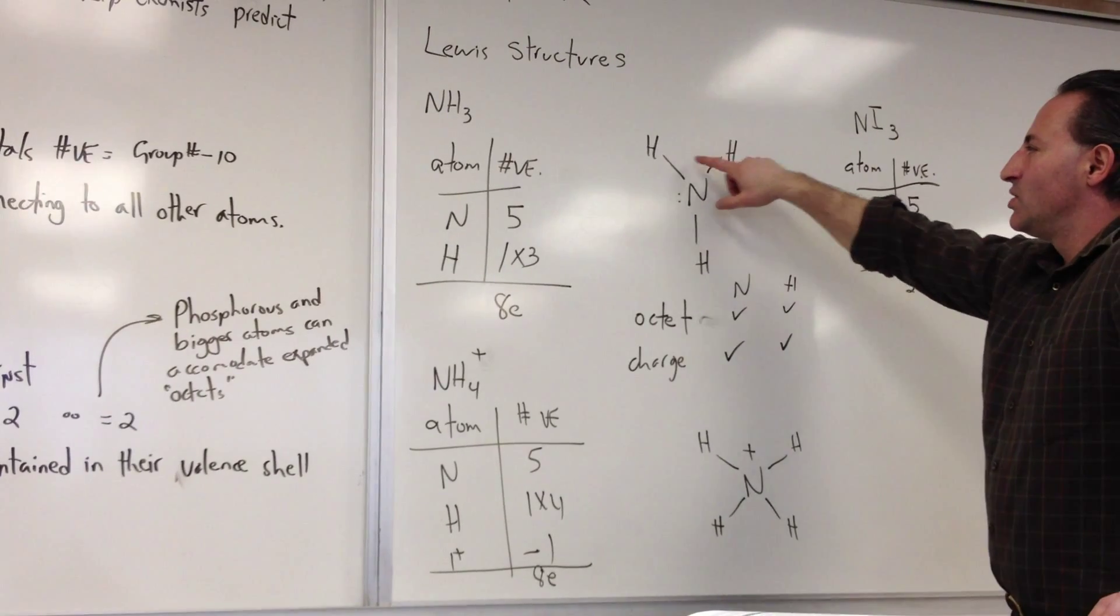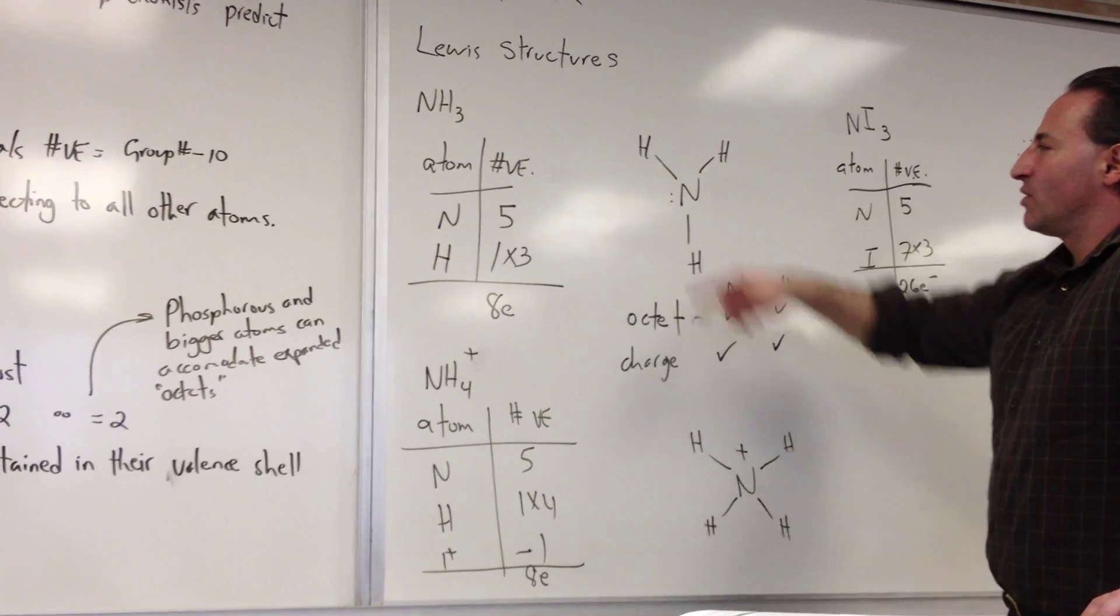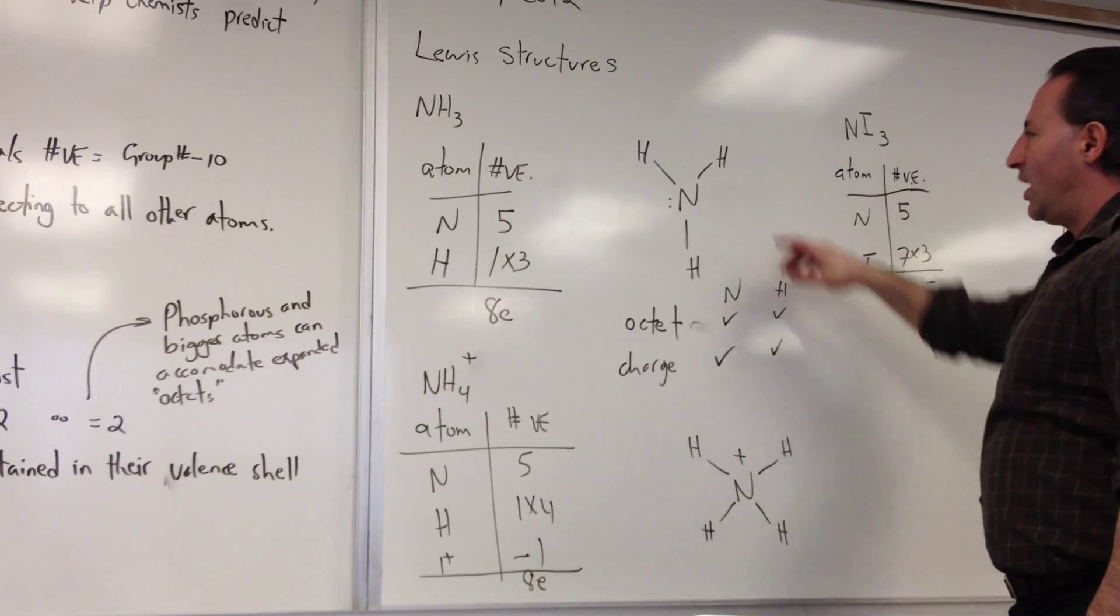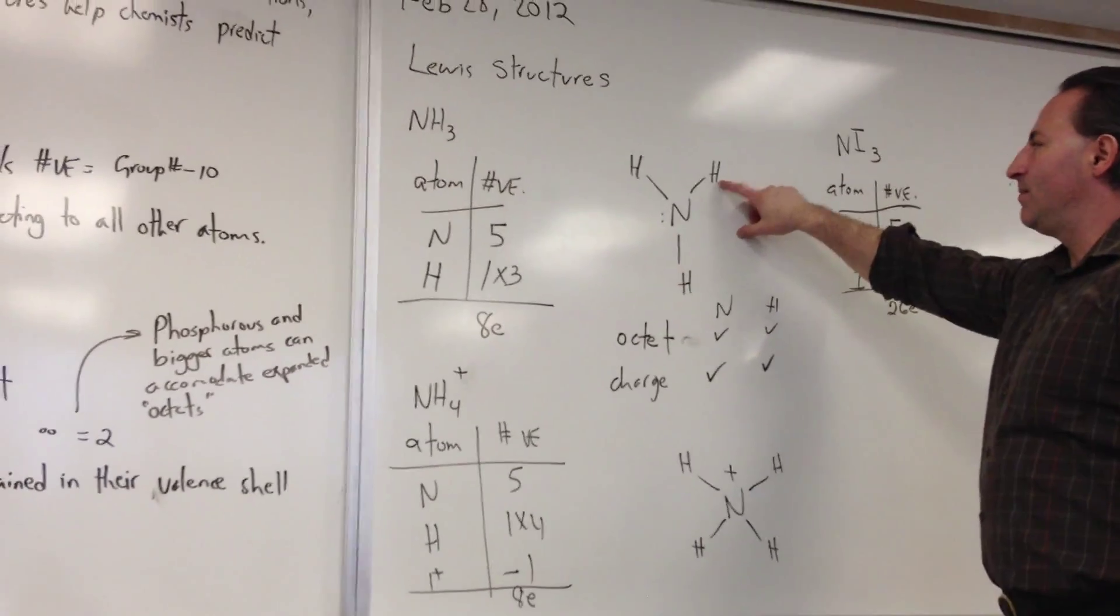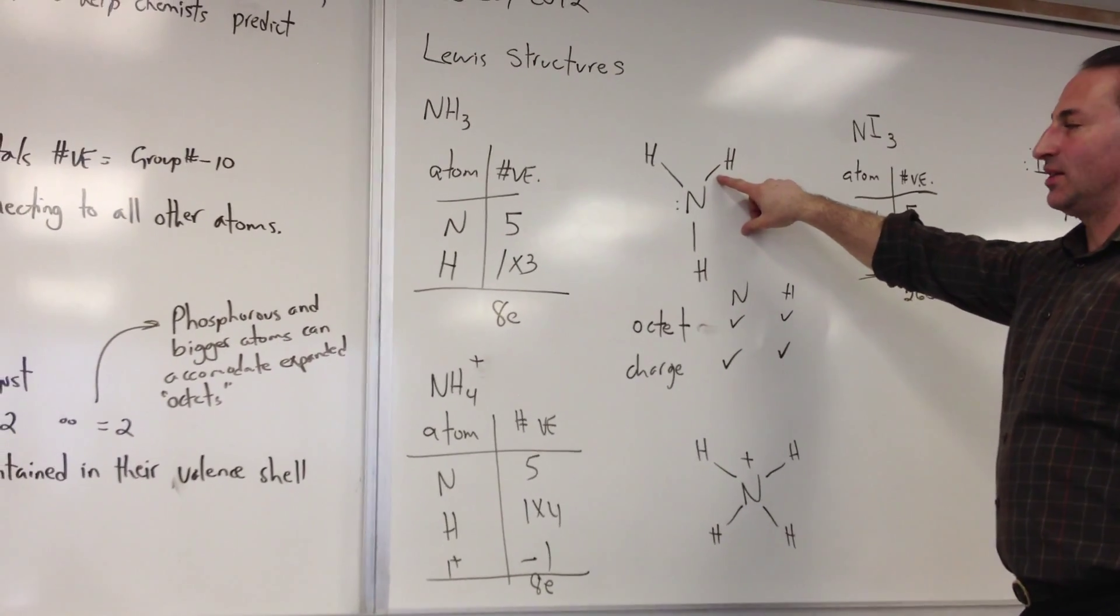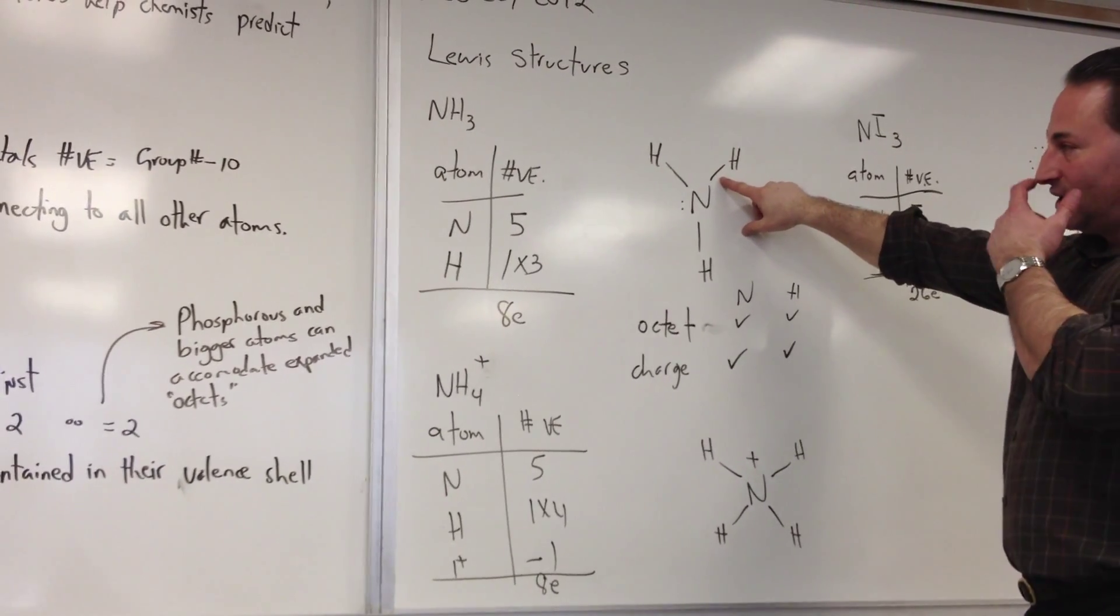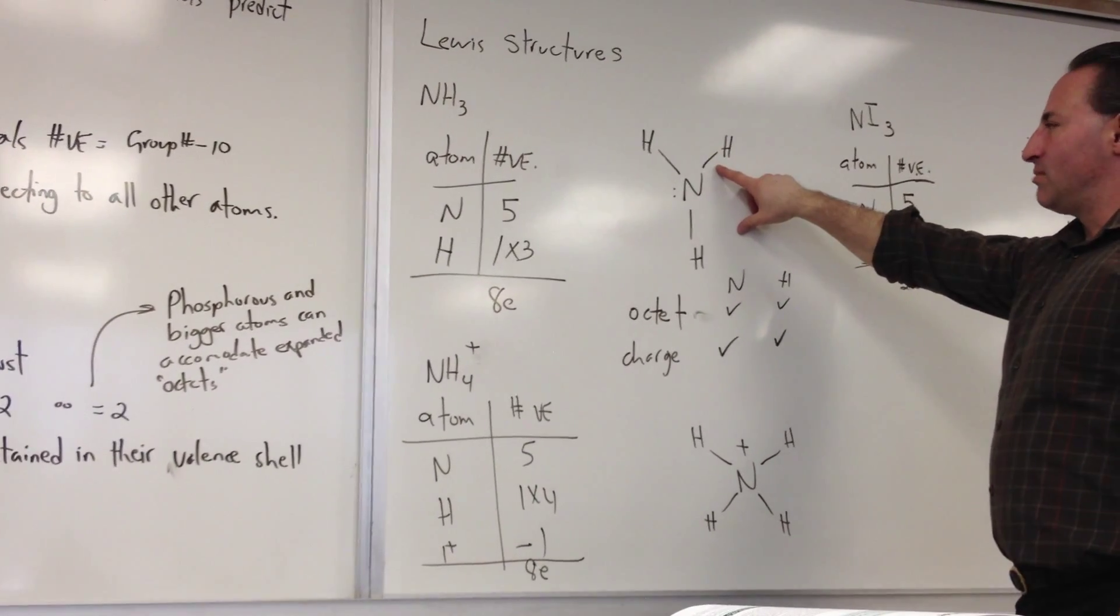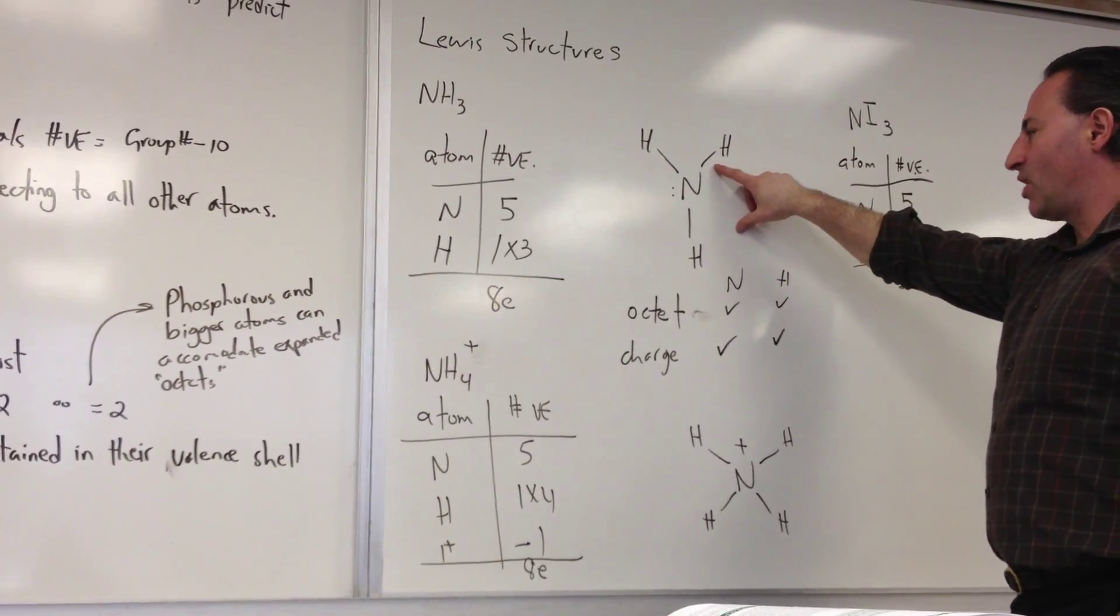In this situation, it has 1, 2, 3 plus the 2 from the lone pair, so a total of 5. So nitrogen has no formal charge. The hydrogen likes to accommodate 1 valence electron and it has a duet, not an octet. So this counts as 2. So the octet requirement is met for hydrogen, and the charge requirement is met as well.